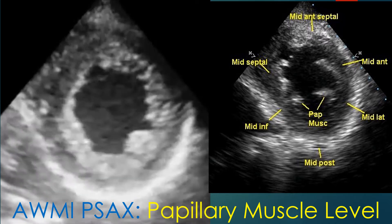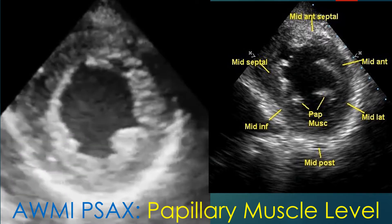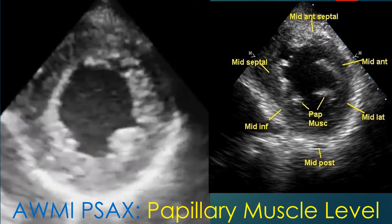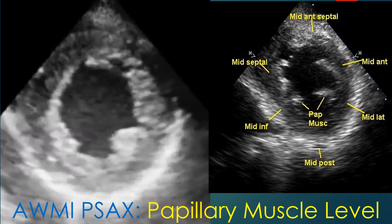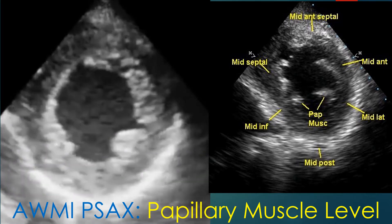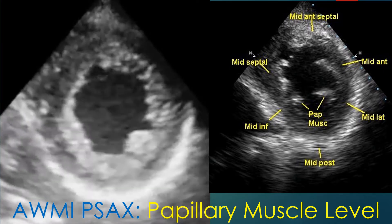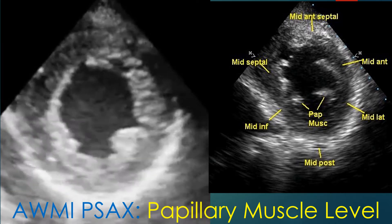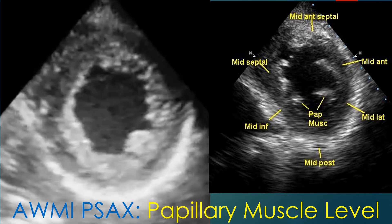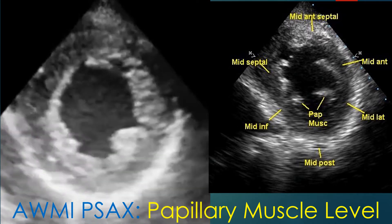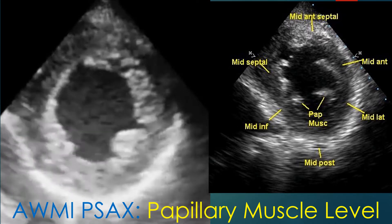Parasternal short axis view at the papillary muscle level showing mid-anteroseptal hypokinesia. Other segments at this level are mid-septal, mid-anterior, mid-lateral, mid-posterior, and mid-inferior.